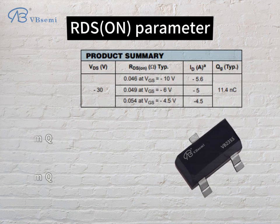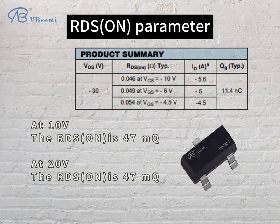At VGS=10V, RDS(ON) is 47mΩ. At VGS=20V, RDS(ON) is also 47mΩ.